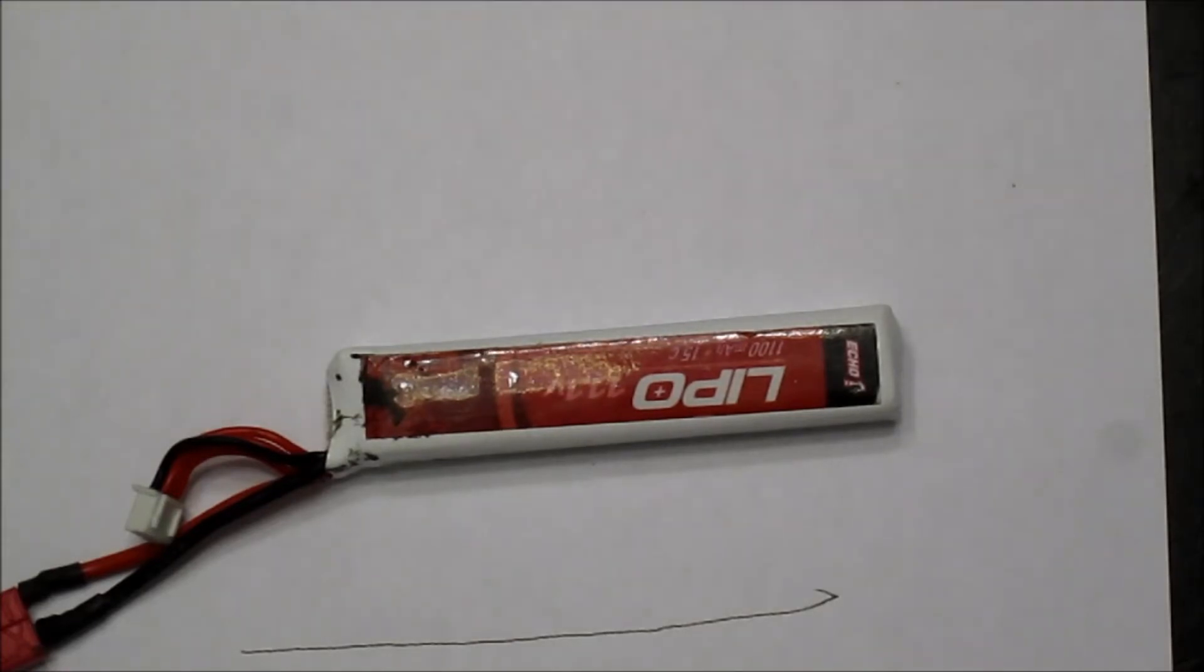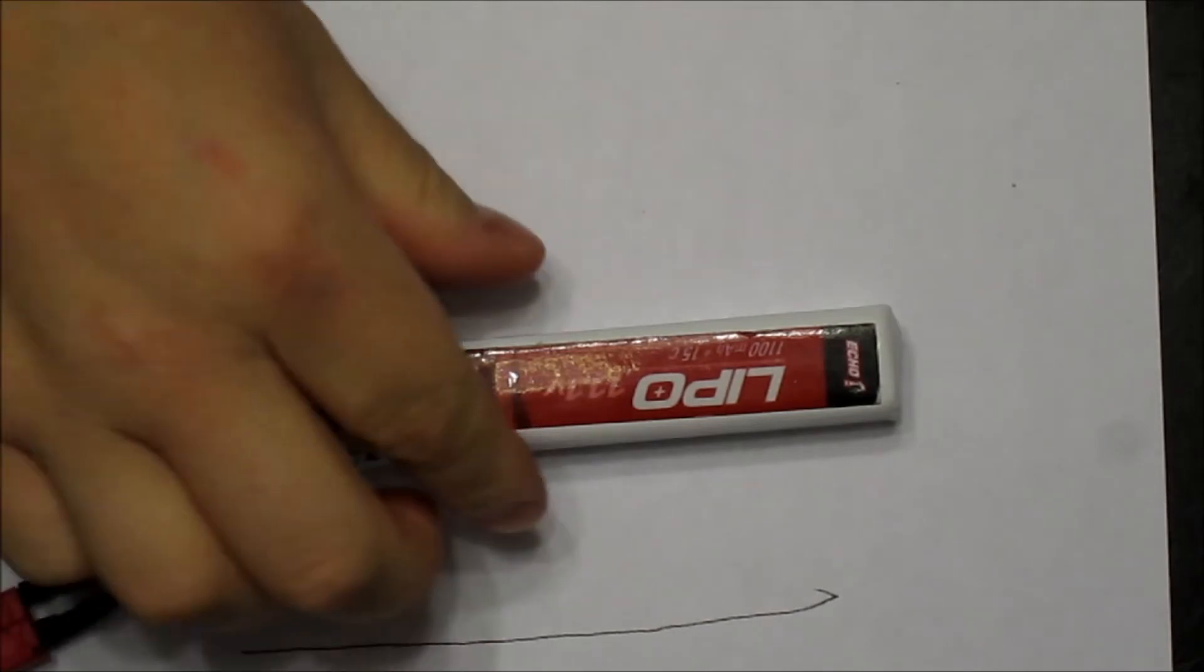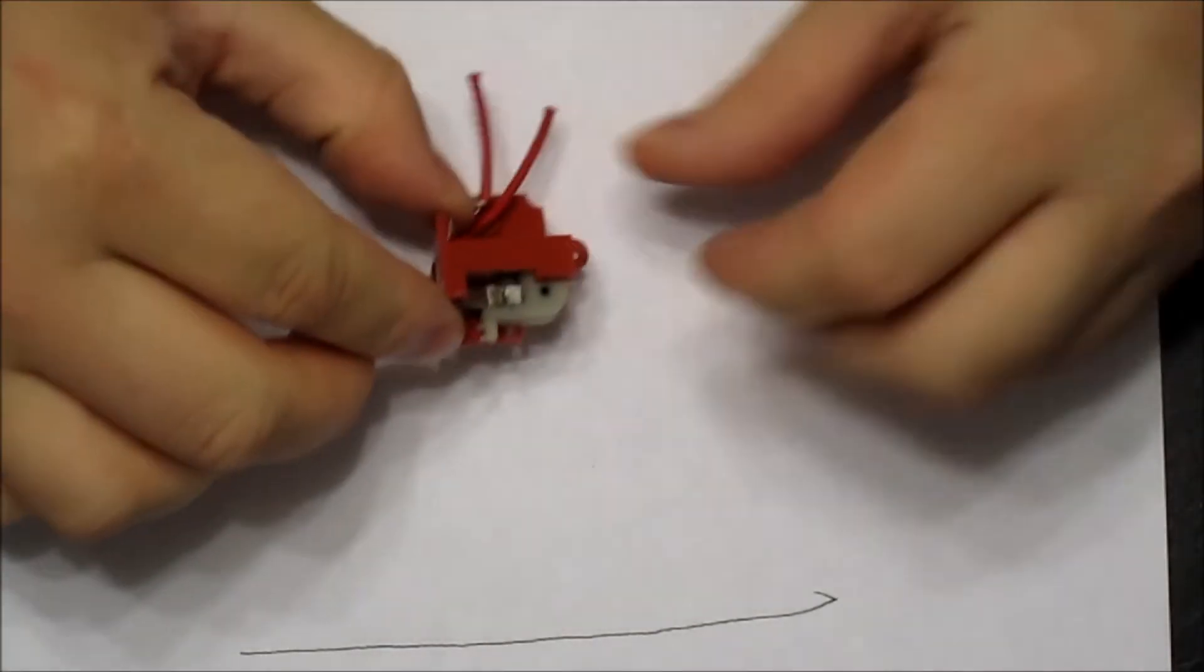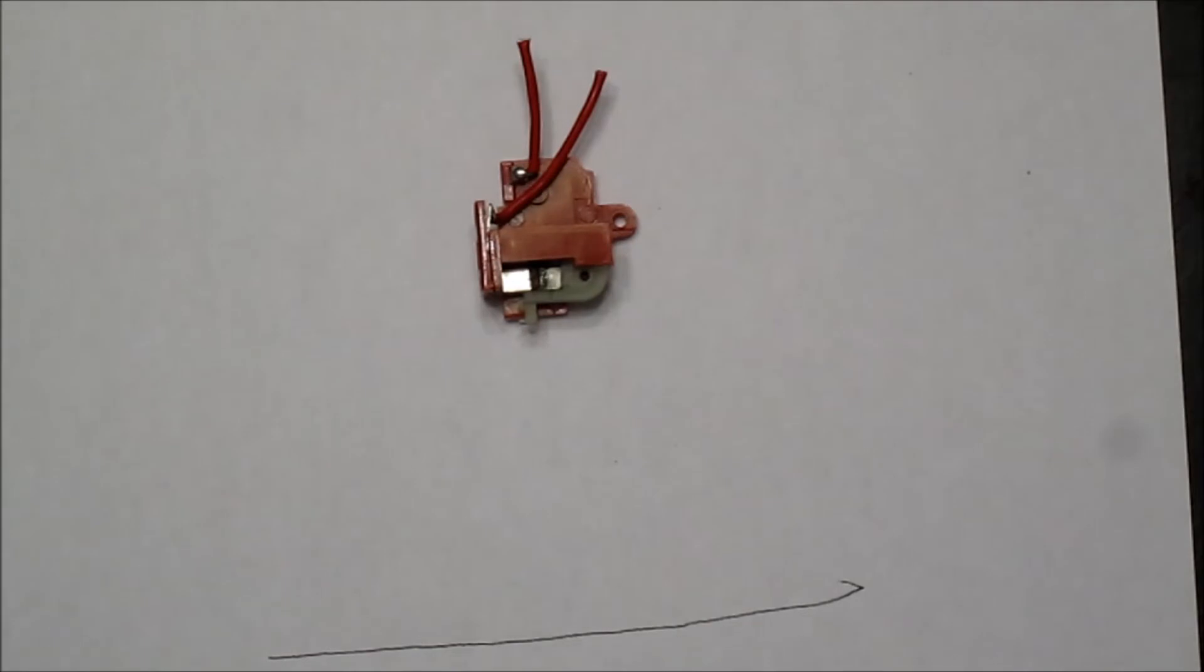So the higher the C rating, the more amps it's going to put out. Now you want to be careful with anything higher than a 15C LiPo because it can damage your trigger quite easily. Now I got a trigger unit here from a version 2 gearbox. I'm just going to quickly explain how a higher C LiPo can damage it.